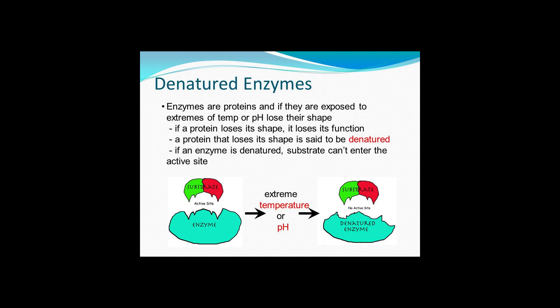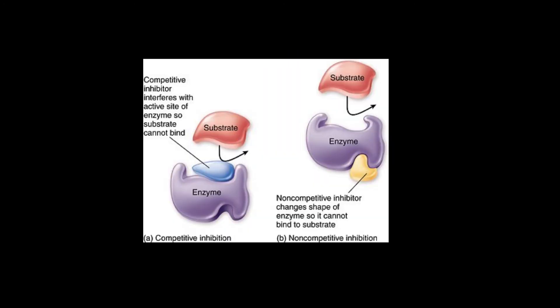What can affect enzyme activity? Since enzymes are usually made of protein, anything that changes the three-dimensional shape of a protein can potentially affect enzyme activity. Temperature, pH, and inhibitors can affect enzyme activity. Competitive inhibitors block the active site so substrates can't bind. Non-competitive inhibitors bind outside the active site but change the shape of the enzyme so the substrate can't bind.